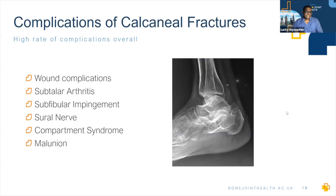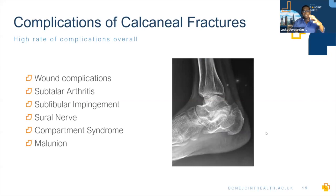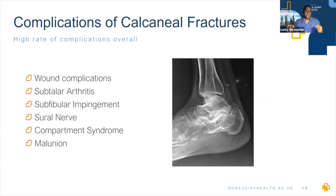Broadly speaking, complications are significant: wound complications are common; patients frequently go on to develop subtalar arthritis; lateral wall blowout causing subfibular impingement is very miserable; the sural nerve can be injured both from the fracture and from surgery; approximately 10% of severe calcaneal fractures develop compartment syndrome, which can result in clawing of the toes; and malunion is a problem — loss of calcaneal height makes the leg feel short, a wide heel due to lateral wall blowout means patients can't get into a shoe, and it can be painful due to arthritis.